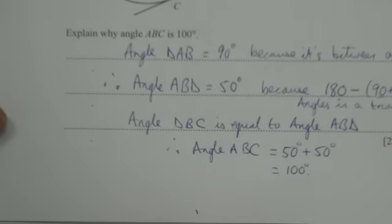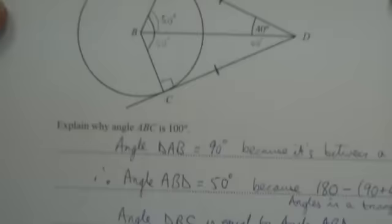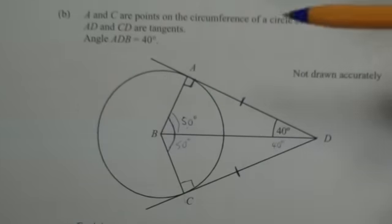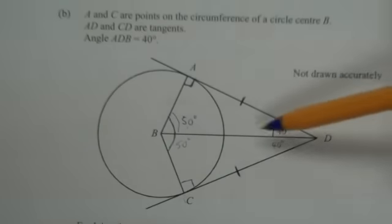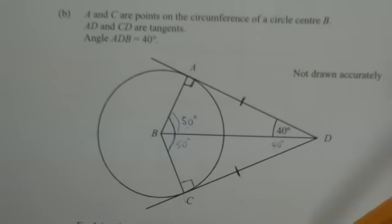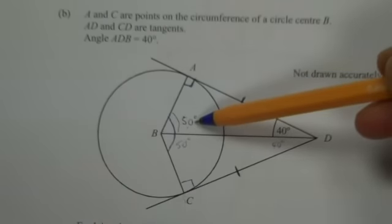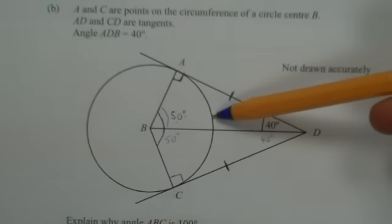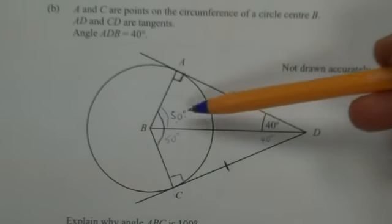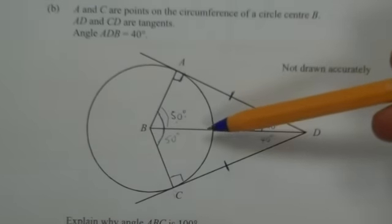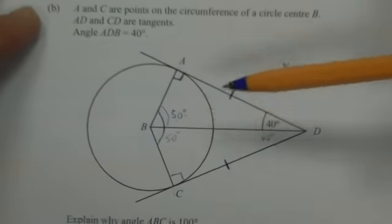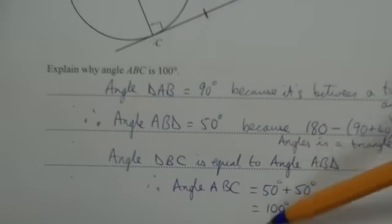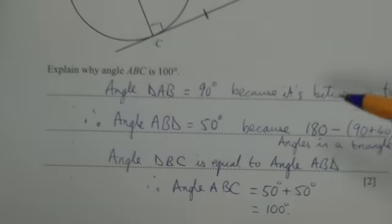And I've given a full explanation there. Now, when you do a question like this, if you do write anything onto the diagram, like I put this little marker here and this little marker here, showing that I knew that they were equal in length, I wrote in the 50 degrees there and the 50 degrees there. Sometimes, if you haven't shown enough workings down here, they might look in the diagram, and they might give you method marks for putting something in the diagram. So it is worth it. But don't just rely on it. Come down here, and you write out your full explanation. So that's the answer for that.